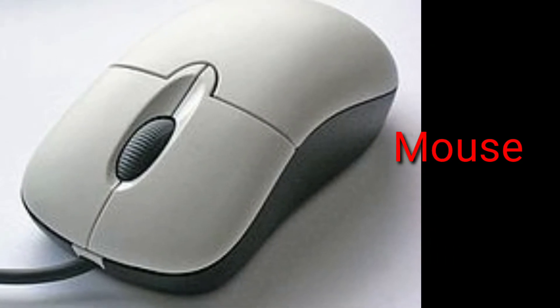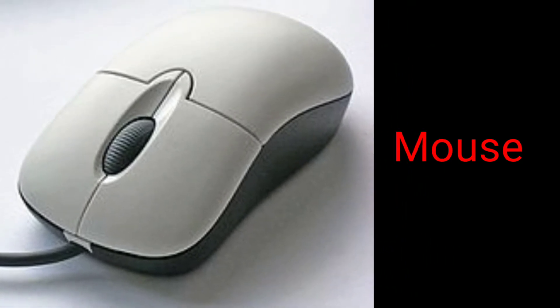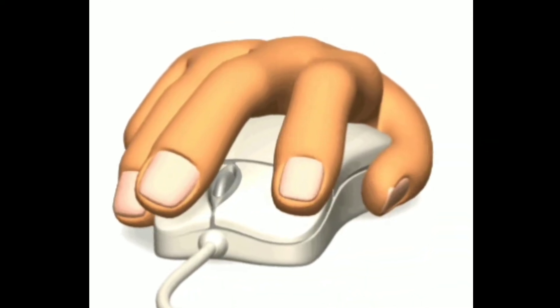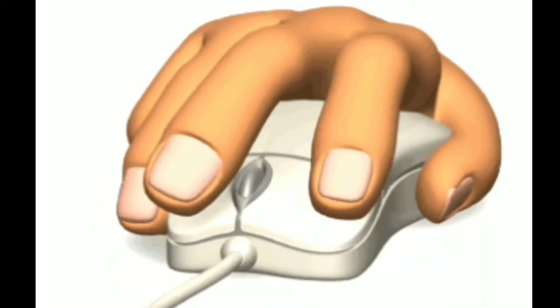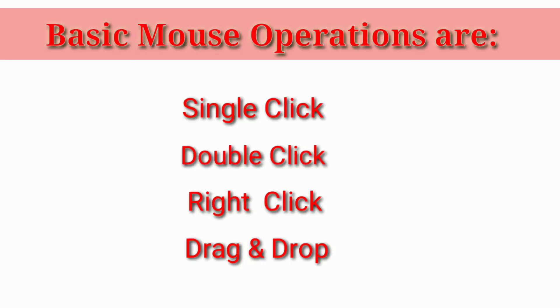Mouse. The mouse is a pointing device used to give instructions to your computer. It is also used to draw pictures. The basic mouse operations are single click, double click, right click, and drag and drop.